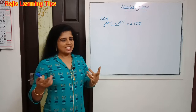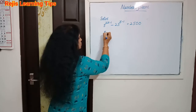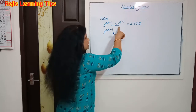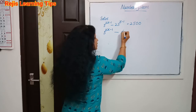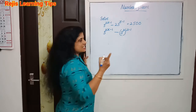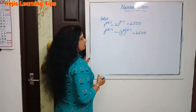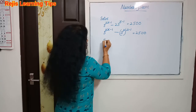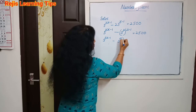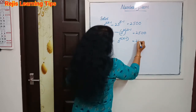You can see the outcome. Let us start. If 5 raise to 2x minus 1, minus 25 — that is 5 square — the whole raise to x minus 1, that is equal to 2500. Then 5 raise to 2x minus 1, minus 5 raise to 2 into x minus 1, that is equal to 2500.